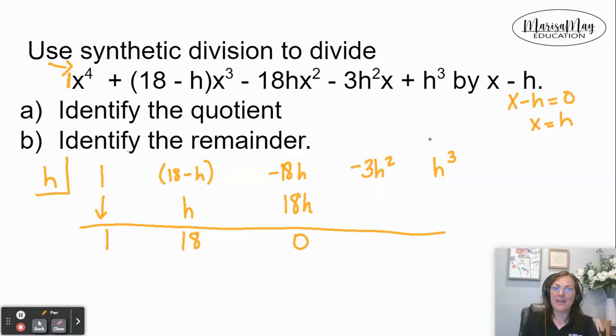Now we multiply. h times 0 is 0. Now we add. Negative 3h to the second plus 0 gives me negative 3h to the second.